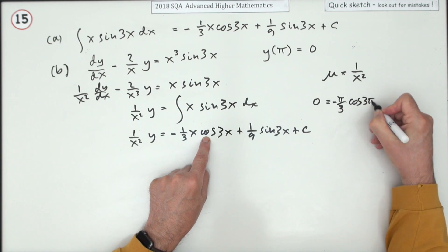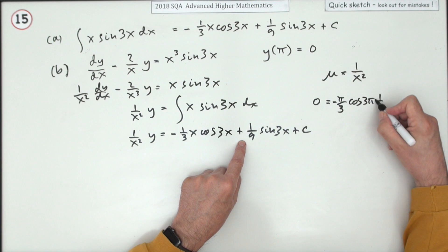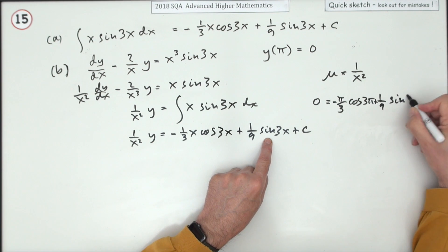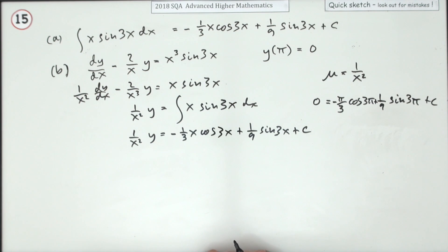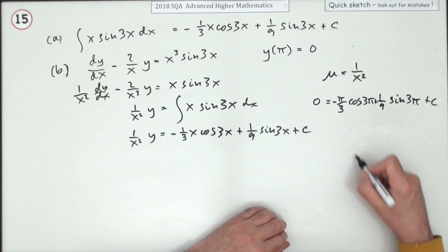That'll be plus a ninth of sine 3π, whoops, plus c. So it's all numbers now. Cos 3π and sine 3π - they'll be exact values. Just think of the graphs of those sine graph.